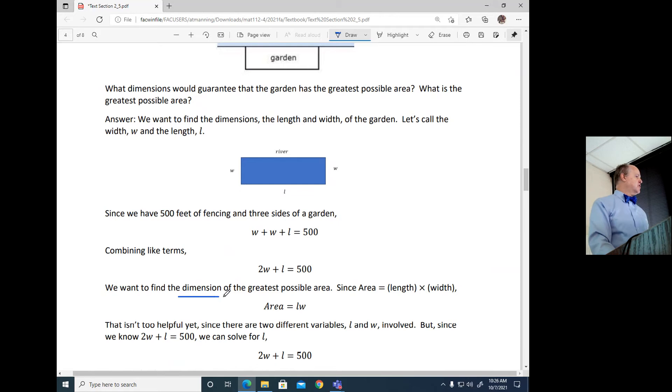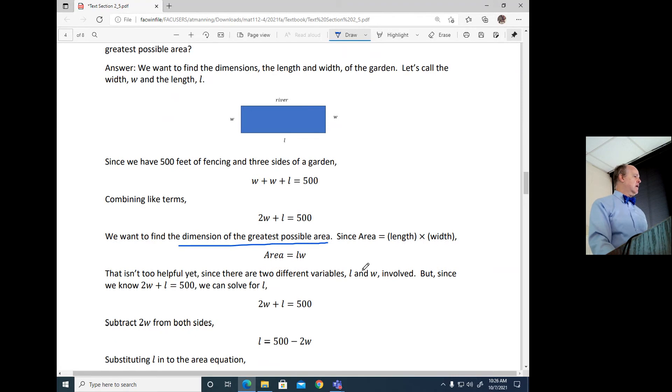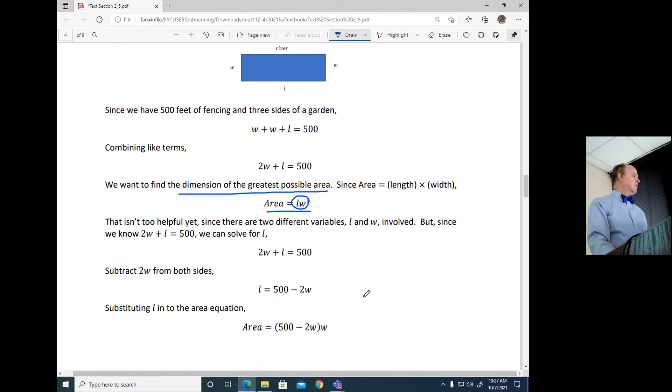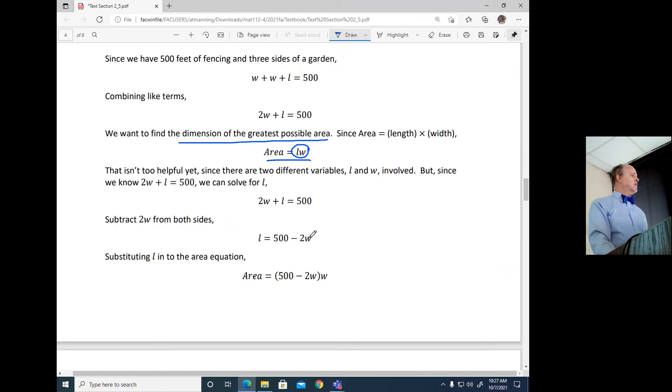But we want to find the dimension of the greatest possible area. Well, area is length times width. So area is L W. Well, it doesn't get us anywhere. We do want to get a maximum L W. So think of maximum L W. Well, we already have from the first formula, 2 W plus L gives us 500, or L is 500 minus 2 W. Well, I can substitute for L up here and do 500 minus 2 W times W is my area. And what do I want to do? I want to get a max of that.